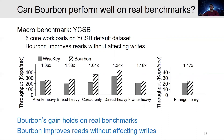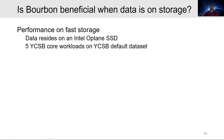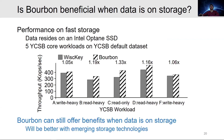Finally, we come back to the condition that data resides in memory and ask if Bourbon is beneficial when the data is on storage. We run the YCSB core workloads on the default dataset with data residing on an NVMe SSD. Bourbon offers over 1.3x gain for the read-only workload, about 1.2x gain for read-heavy workloads, and 1.05x gain for write-heavy workloads. Even when the data is present on a storage device, Bourbon can still offer benefits, and we expect Bourbon to perform better with emerging storage technologies.